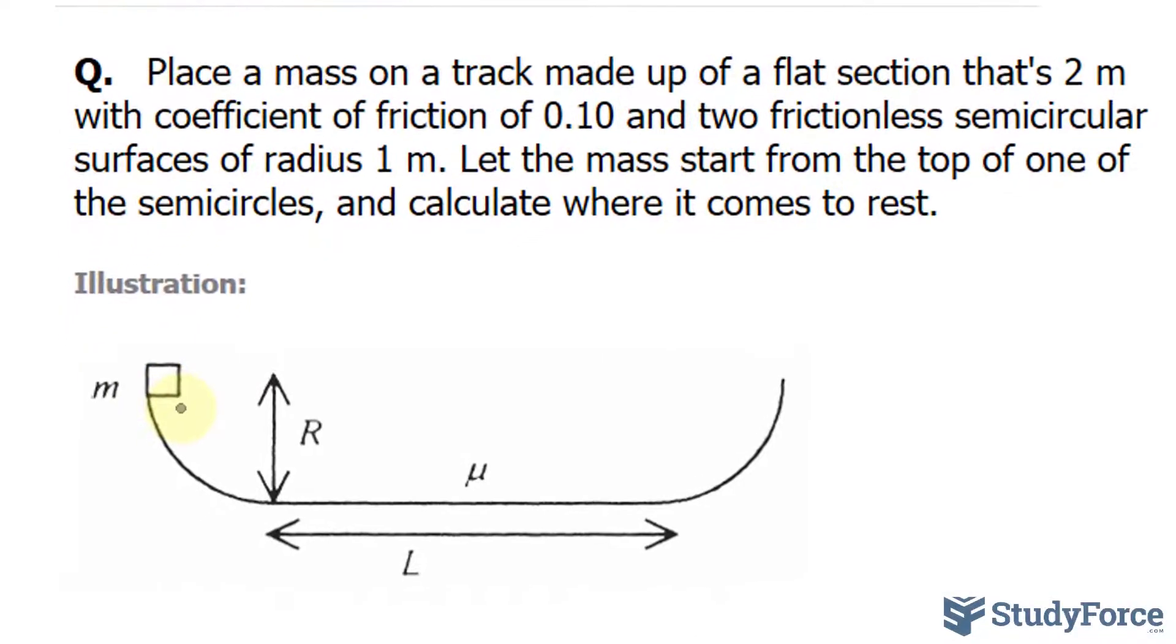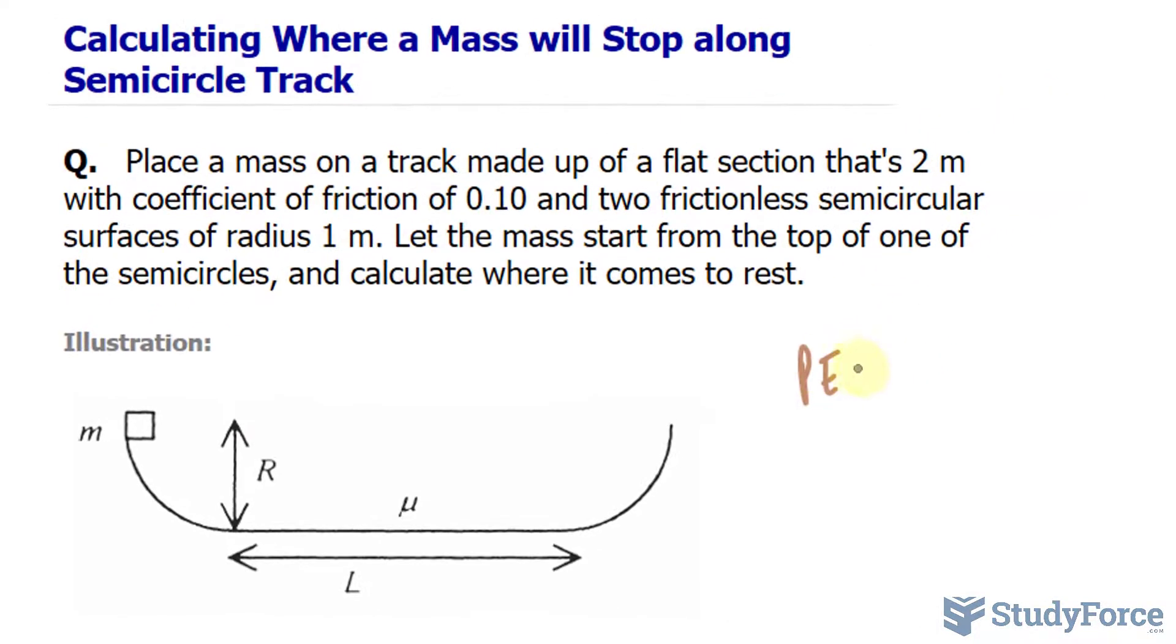Now, since the mass is starting at the top, it holds potential energy. Potential energy can be calculated using mass times the acceleration due to gravity times the height. This illustration helps us out a lot because, as you can tell, if this is a semicircle, then the radius serves as the height at which this mass is falling. So I'll replace this h with the radius that was given in the question as 1 meter.